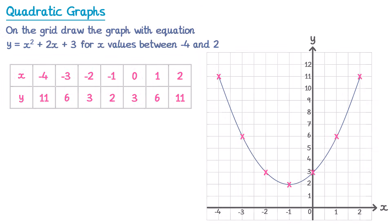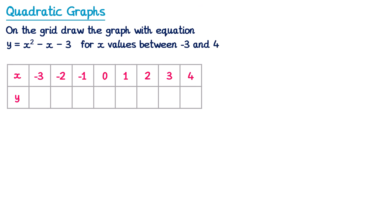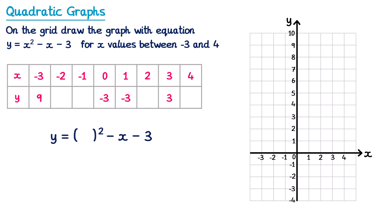Let's have a look at a second example. This time we draw a graph with equation y equals x squared minus x minus 3, and the x values go from negative 3 to 4. We've got a table with some values filled in. Just like before, we take the equation and replace each x with a bracket — so x squared becomes bracket squared and the negative x becomes negative bracket. We don't need to do when x is negative 3 since that's already been done for us.